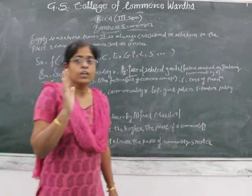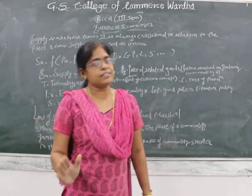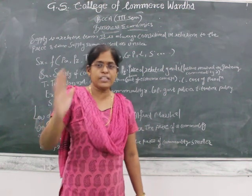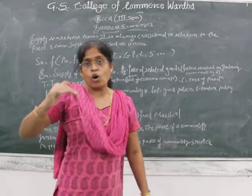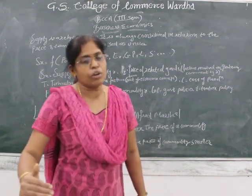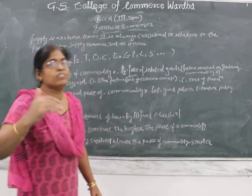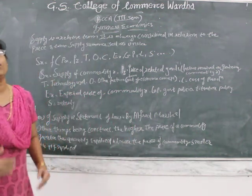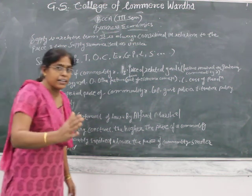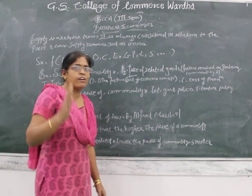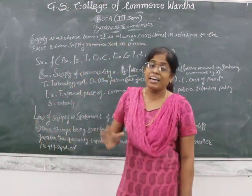The four factor determinants of law of supply are: first, quantity of the commodity; second, price of the commodity; third, time duration of the particular commodity; and fourth, willingness of the seller to sell the commodity in the market.